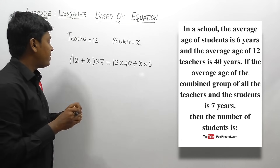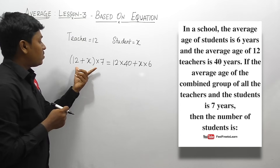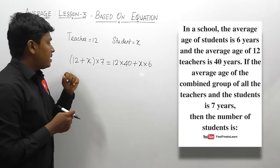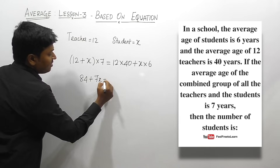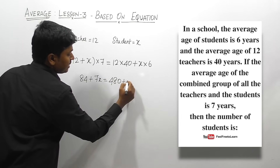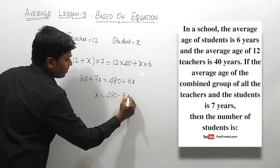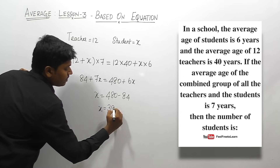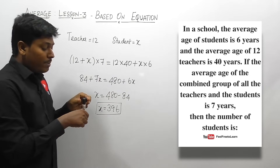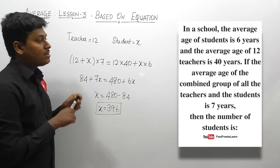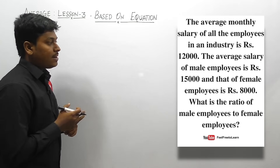So (12 plus x) into 7 gives 84 plus 7x, which equals 480 plus 6x. Therefore 7x minus 6x equals 480 minus 84, so x equals 396. Finally, we can say that there are 396 students in the school. That is the answer for question number two.